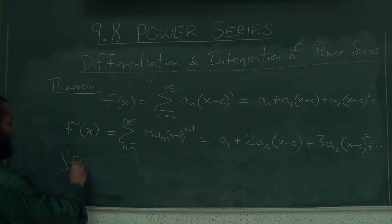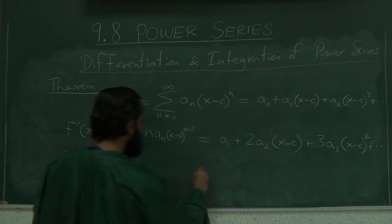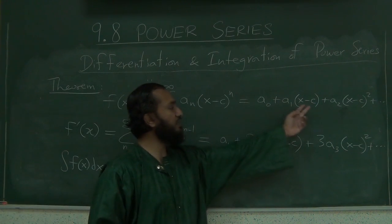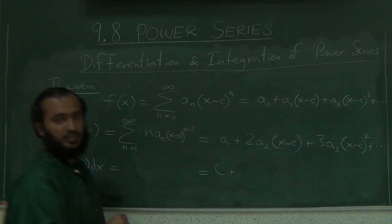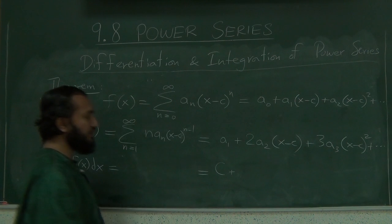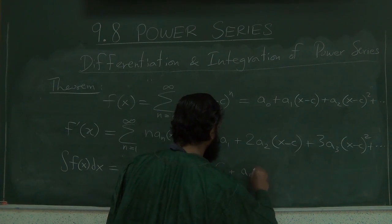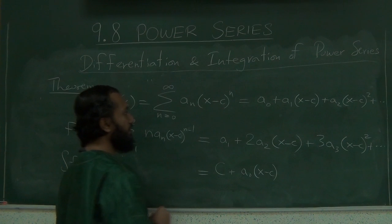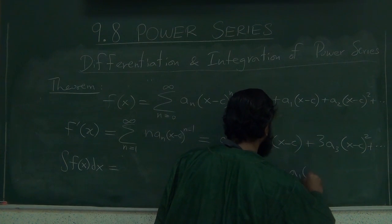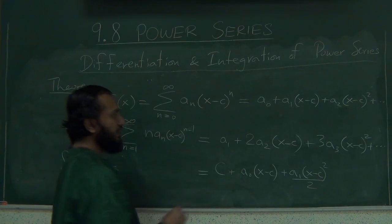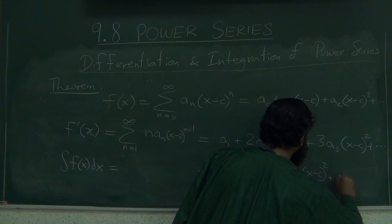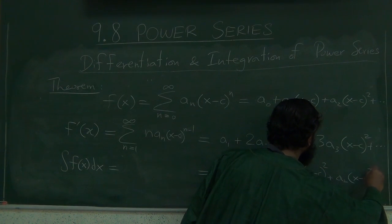And then the integral of f, the integral of the same thing. Let's now integrate this guy one term at a time. So you can write it as constant of integration, which could be any constant of integration and all of them will be antiderivatives plus a_0 times (x minus c) plus a_1(x minus c) square over 2, right? Let's write down one more. A_2(x minus c) cube over 3 and so on.